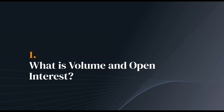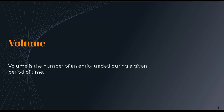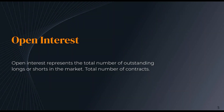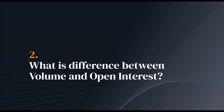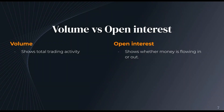What is volume and open interest? Volume is just the total number of an entity traded during a given period of time. Open interest represents the total number of outstanding longs or shorts in the market — the total number of contracts which are open at any time. Volume shows total trading activity, how many trades have happened during a given period. Open interest shows whether money is actually flowing in or out of the market.